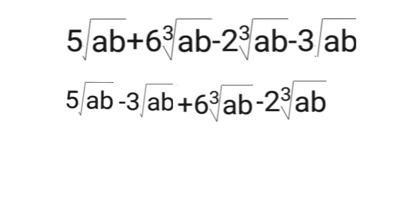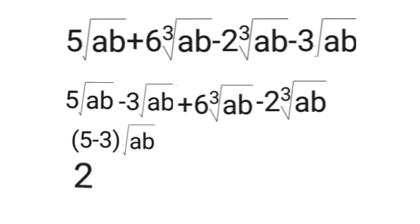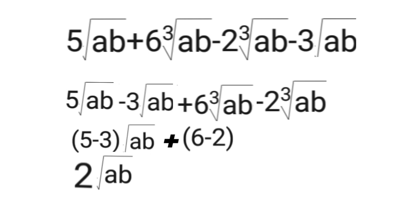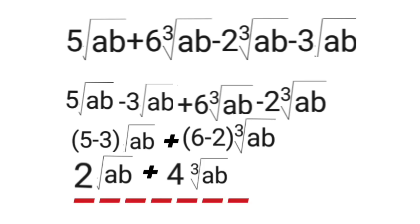Now let's subtract: 5 minus 3 is 2. They have the same index 2 and the same radicand ab, so we write 2 square root of ab. Next, 6 minus 2 is 4. They also have the same index and same radicand, so copy index 3 — we get 4 cube root of ab. So the final answer is 2 square root of ab plus 4 cube root of ab.